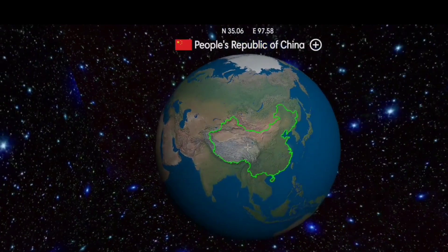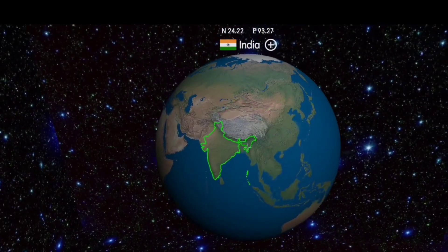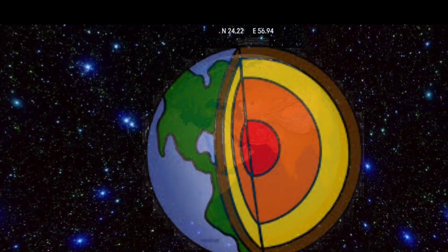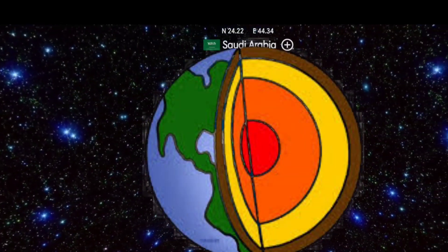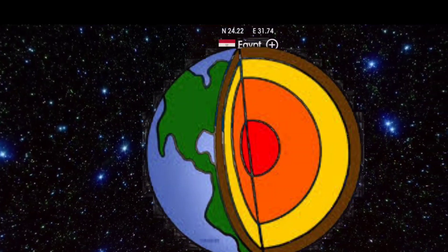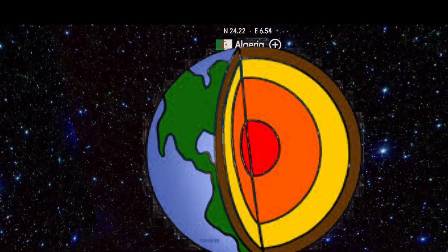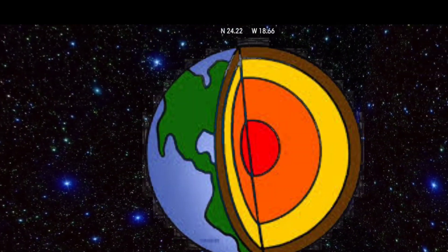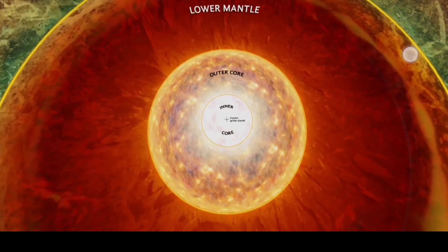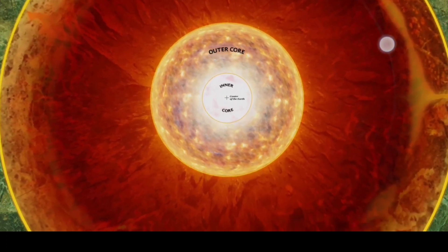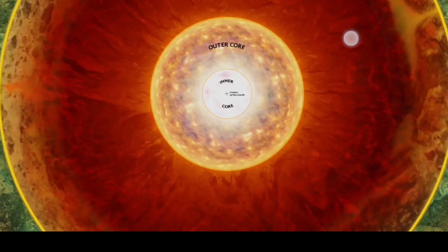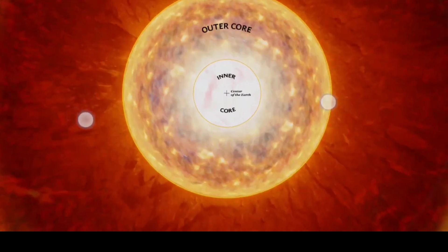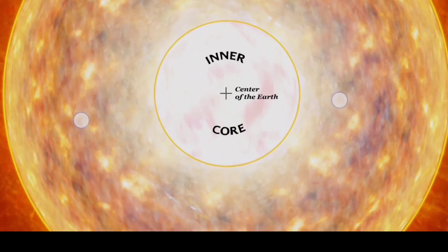Before going to the earthquake, let us have a glance at our Earth. Our Earth is divided into three layers. Going from bottom to top: the first one is the core, which is the deepest layer of the Earth. The core is divided into outer core and inner core.